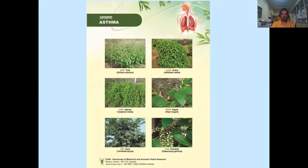These are the plants being used to cure asthma, which is a respiratory disease. The six major plants include Tulsi, Adusa, Dhamasa, Pippali, Arjun and Rudraksha. These are the plants which are popularly used for curing asthma.